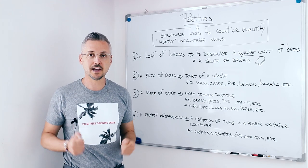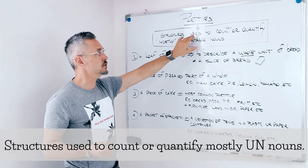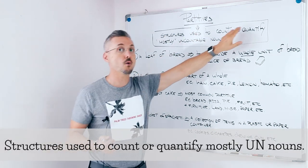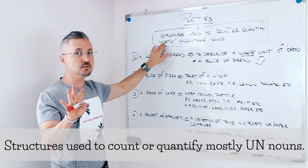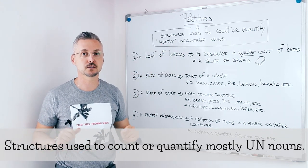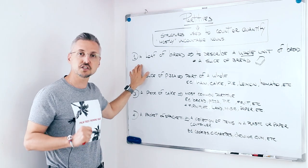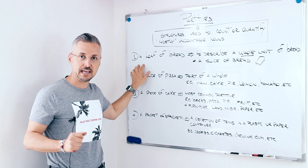So, we're back. What are partitives? They are structures used to count or quantify mostly uncountable nouns, but also countable, as we will see on our list. So, let's check the first example that I gave you.